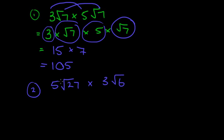now you don't have to write that way each time, because I know that 5 times 3 is 15. So I'm going to write that out the start away. We've got root 27 times root 6.